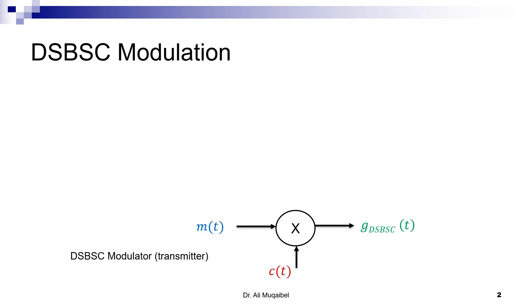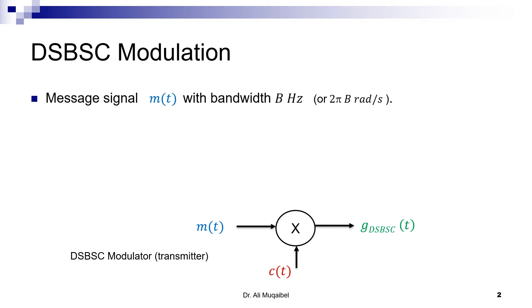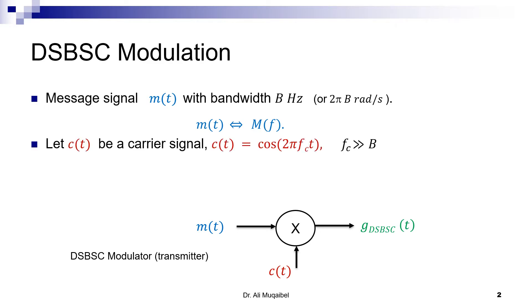What is Double Sideband Suppressed Carrier modulation and where do we get the name from? We define the message m(t) to be a message of bandwidth B hertz. In radians, that's 2π times B radians per second. The frequency representation is capital M(f). Our carrier, shown in red, is defined to be cosine(2π·fc·t), where fc is the carrier frequency, assumed to be much much larger than the bandwidth of the message.